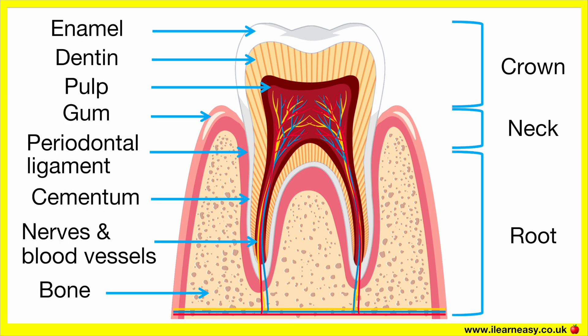The different parts of the tooth are: Crown, Neck, Root, Enamel, Dentin, Pulp, Gum, Periodontal ligament, Cementum, Nerves and blood vessels, and Bone.